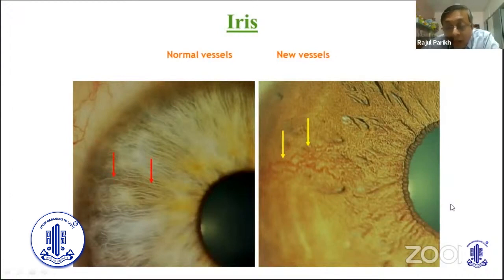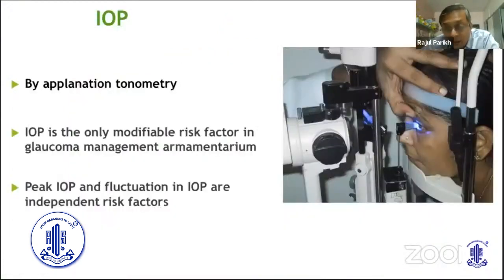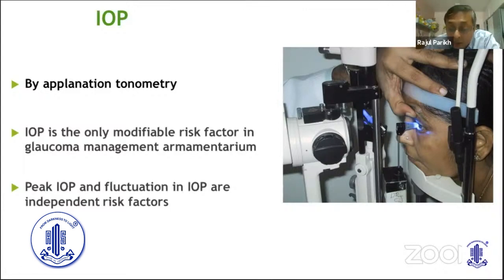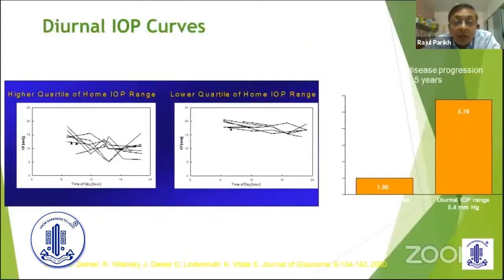As I said at the beginning of my talk, IOP is not the sole criterion for diagnosis of glaucoma, but I want to reiterate: IOP is very important because at this point in time, that's the only modifiable risk factor. So we have to check applanation tonometry — and I am very clearly saying it should be applanation tonometry. Non-contact tonometry or air-puff should not be used for glaucoma management. On IOP, we also need to remember that peak IOP and IOP fluctuation are independent risk factors and we need to look into them. Studies have shown that the higher the diurnal fluctuation, the higher the risk.